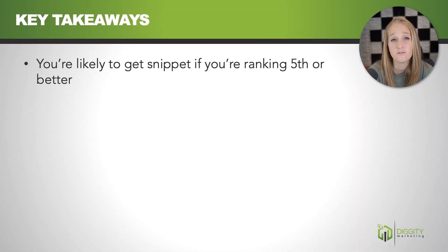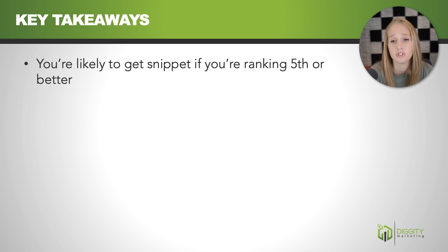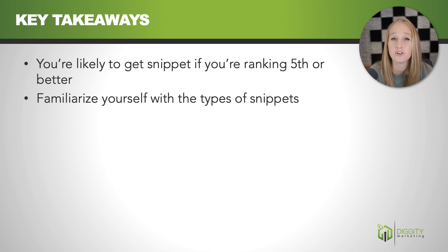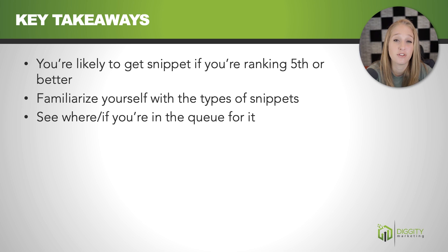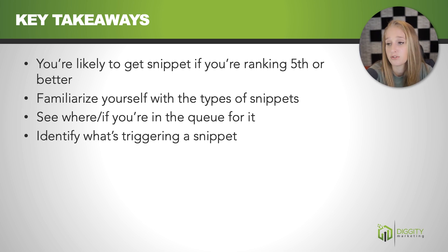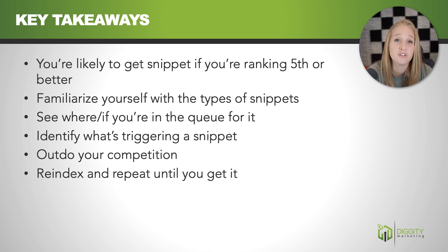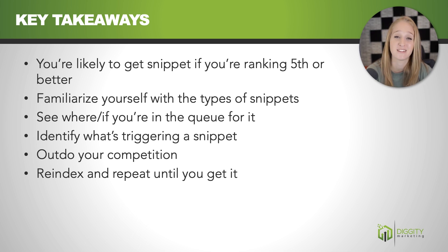So the key takeaways: first and foremost, only go after things where you're actually likely to get a snippet — so if you're ranking first through fifth, you have potential to get that snippet. Make sure you're familiar with the types of snippets and how to optimize for each. The process doesn't change much based on type outside of what you're looking for with those triggers: first, see if you're in the queue and where; then identify what those triggers are; then outdo your competition. Re-index it and repeat until you get that snippet, and hopefully with a little bit of perseverance, you can get them a hundred percent of the time.